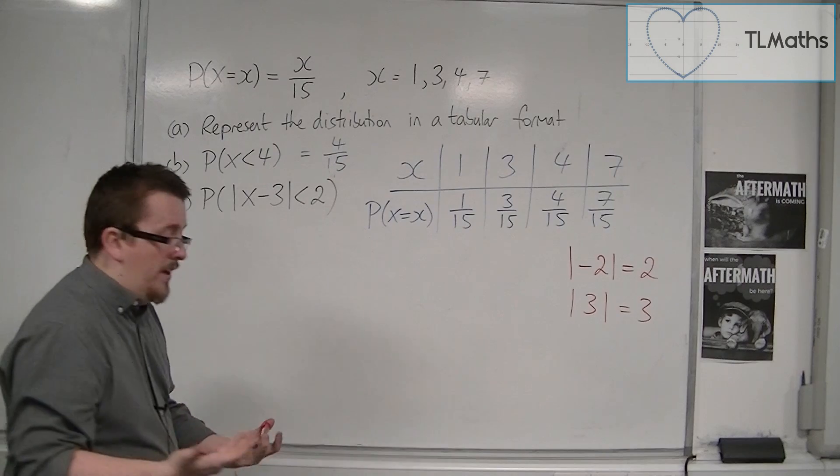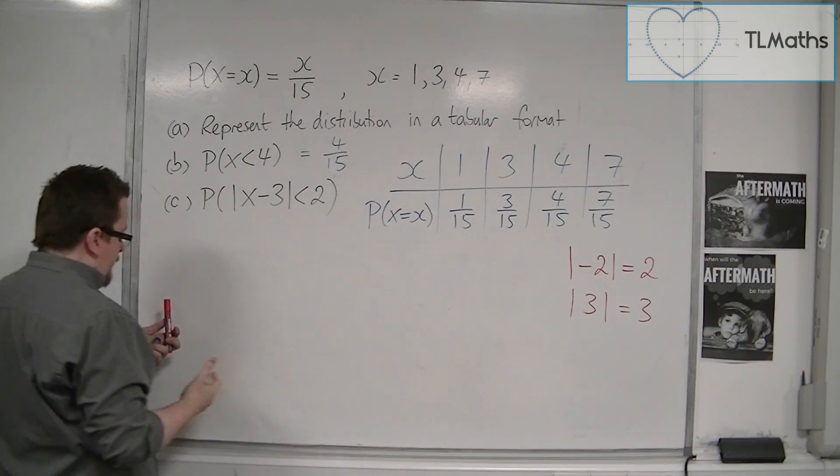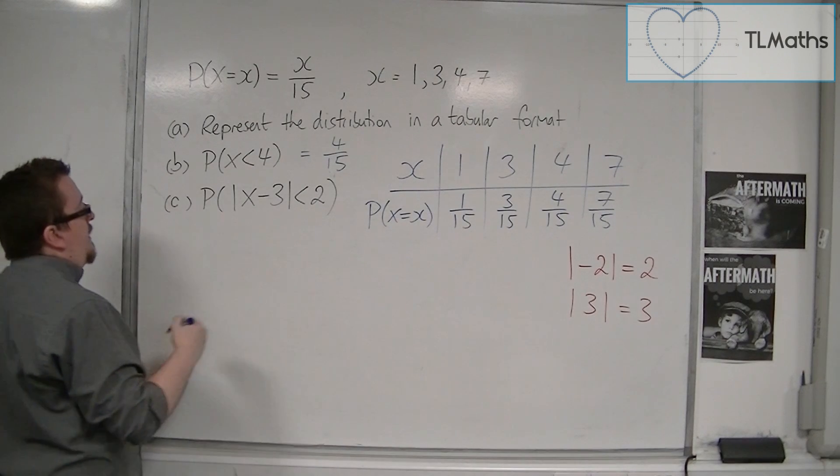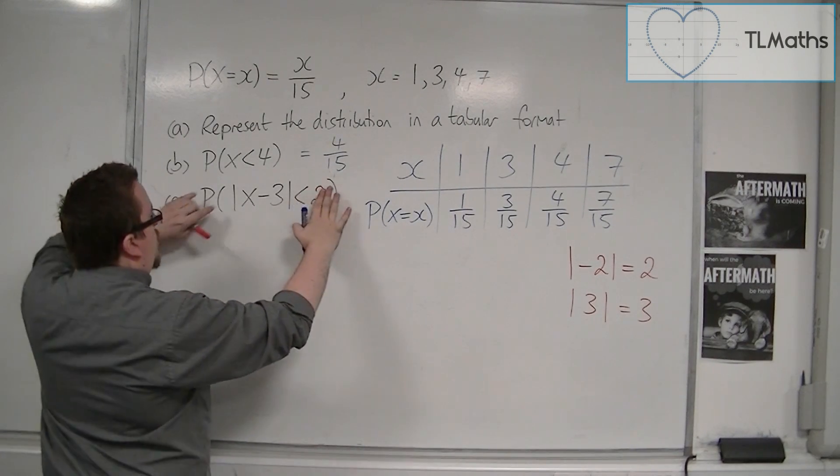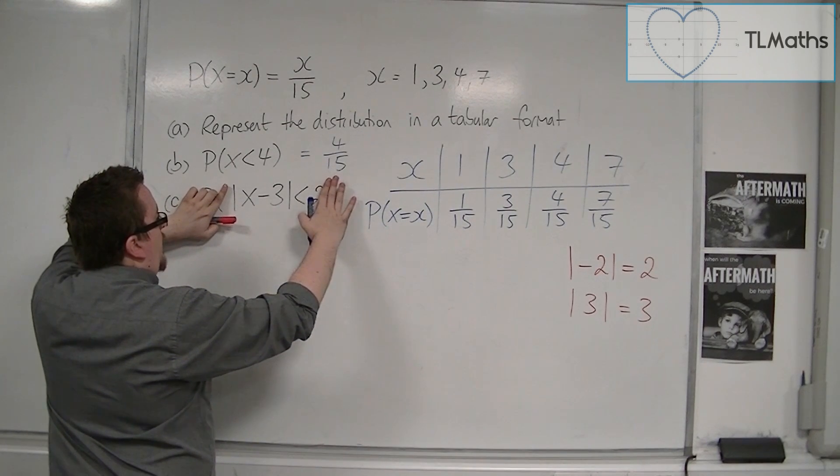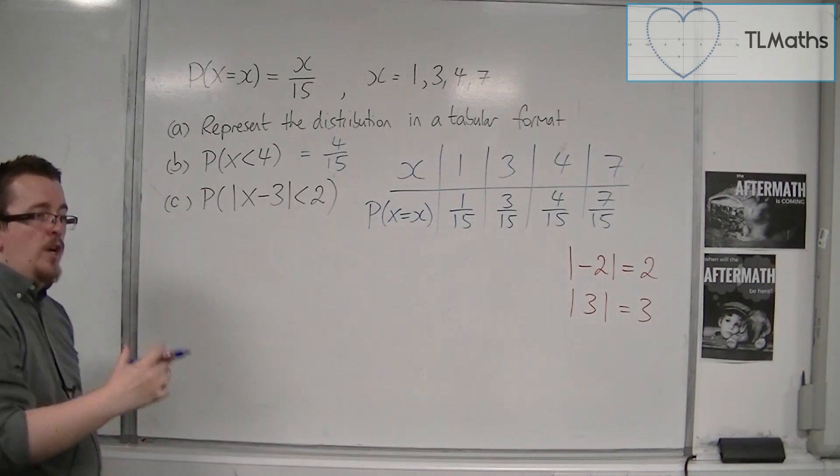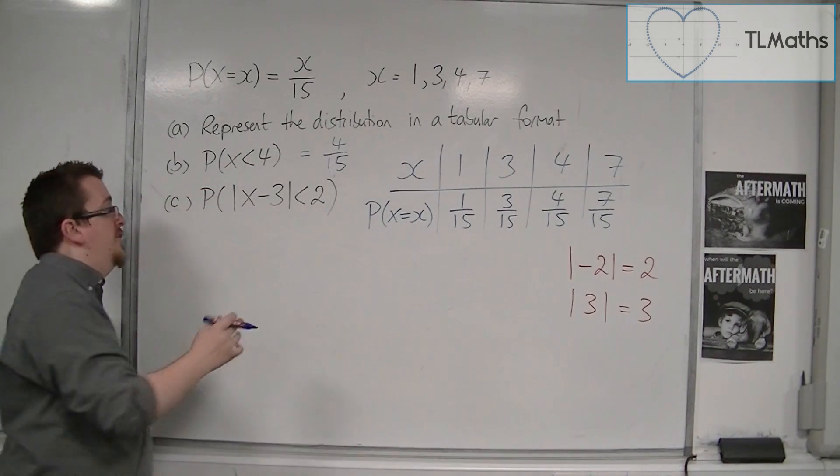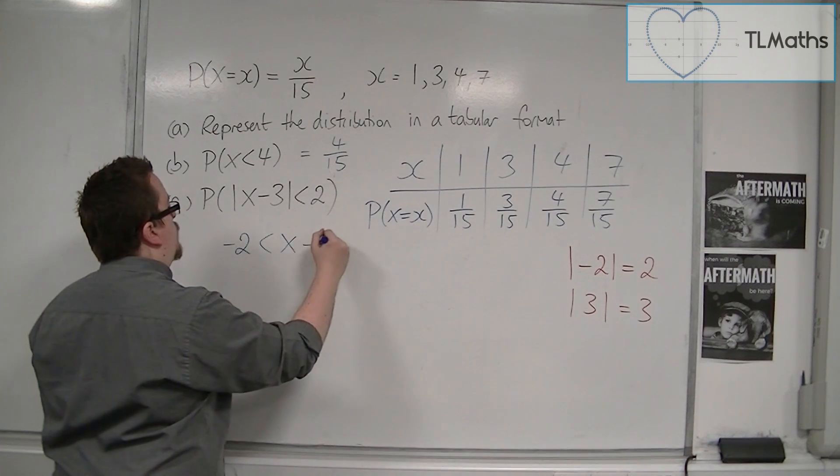What does that mean for us? So effectively, what we have is that if the modulus, if we just ignore that probability sign, the modulus of x minus 3 is less than 2 means that x minus 3 can range between minus 2 and 2. So it is equivalent to writing this.